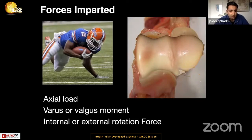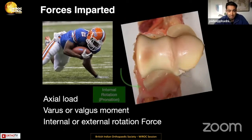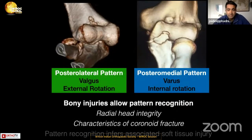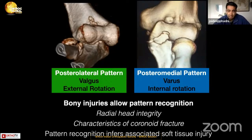The forces imparted to an injured elbow are a combination of axial load, varus or valgus moment, and internal or external rotation — rotation in the axial plane of the ulna relative to the distal humerus. This combination of forces gives us two broad patterns of injury: a posterolateral pattern, with valgus and external rotation, and a posteromedial pattern, with predominantly varus and internal rotation.